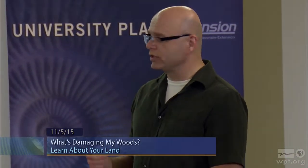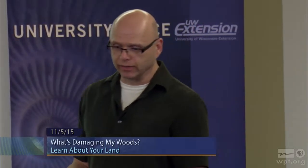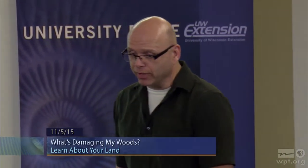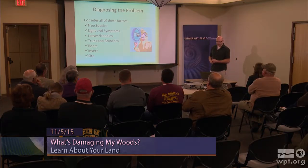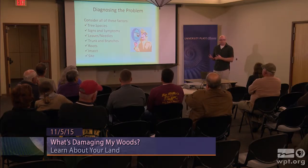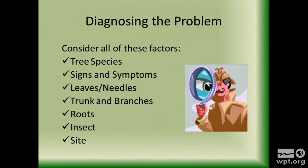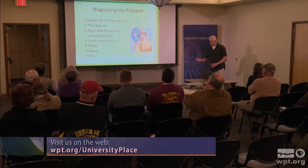All these tools you might be able to do yourself, but I encourage you to use a forester to help make sure you get exactly what you need. Now, like Sherlock Holmes, you're going to figure out by the things you see what's going on in your forest. There are a lot of things to consider: what kind of tree is it, what are the signs and symptoms, what's going on with the leaves, needles, branches, and trunk? Can you see death, mushrooms growing from roots, or insects? What's going on with the site? We'll talk about each of these.